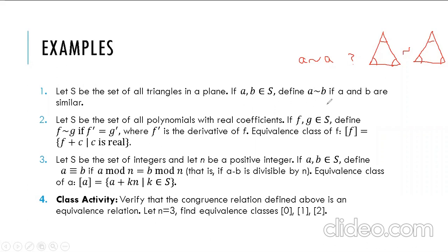Secondly, if triangle A is similar to triangle B, does this also mean B is similar to A? Similarity means corresponding angles are equal. If the angles of triangle A equal the angles of triangle B, then naturally the angles of B also equal the angles of A. The answer is yes, so this relation satisfies the symmetric property.